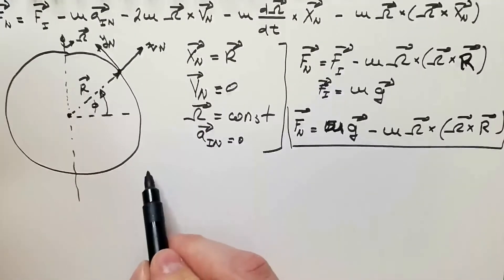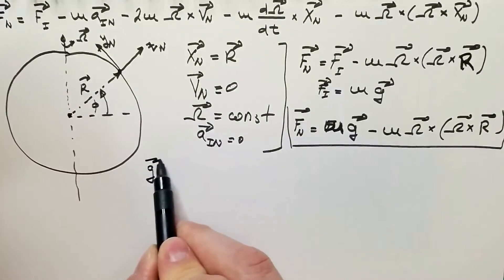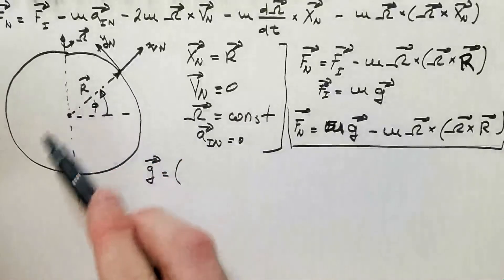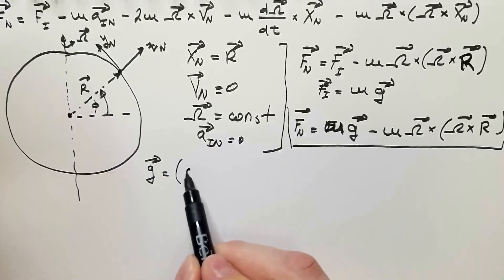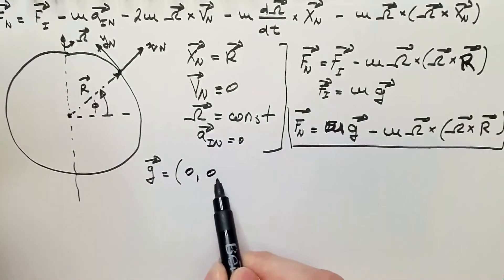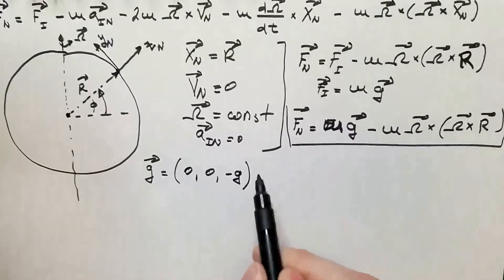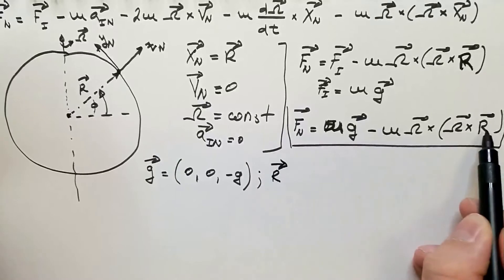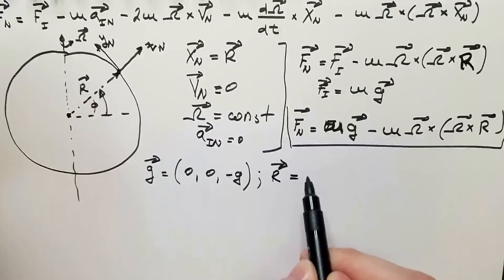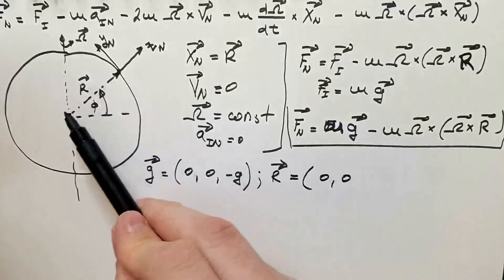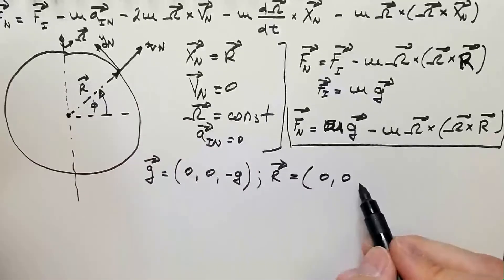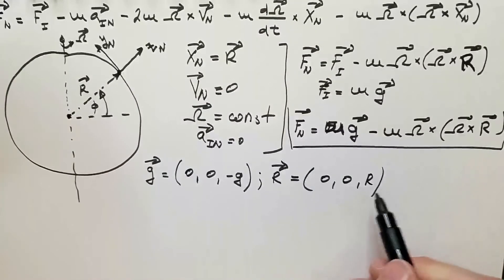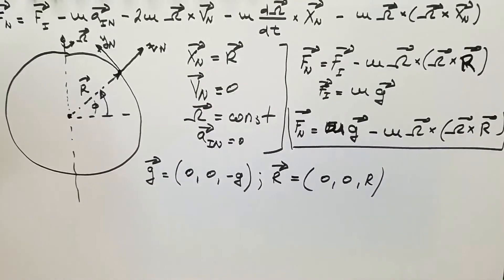Of course, it is very easy to find components of vector G, because gravity is always attractive and is pulling things towards the center of the Earth, so the components are (0, 0, -G). It is equally easy to find components of vector R, because it also has components (0, 0, R), it's always radially out, where this R is the magnitude of radius vector.